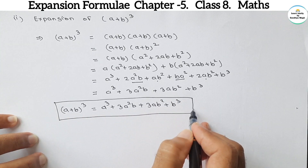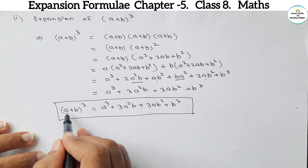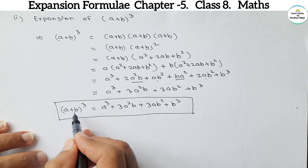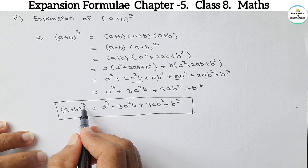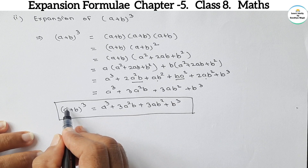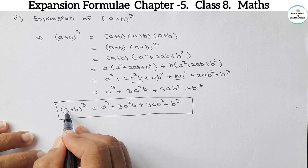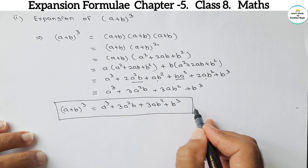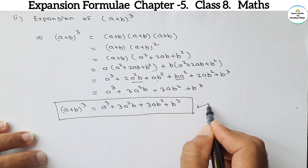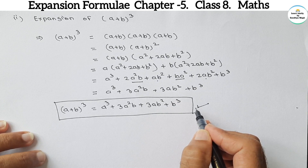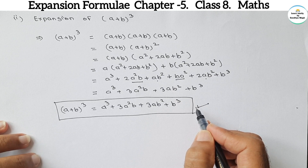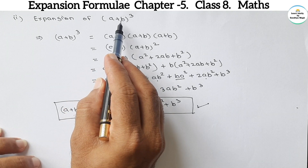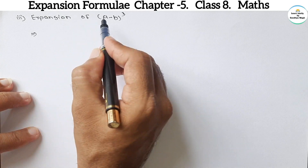A simple way to memorize this formula: with two variables a and b and a cube bracket, write a³ and b³ at the ends. Since it is a cube, write coefficient 3, giving 3a²b and 3ab². This formula will be used while solving practice sets in the next video.